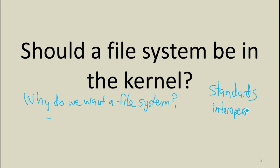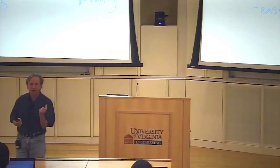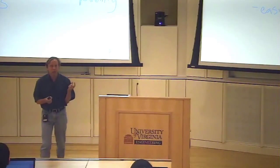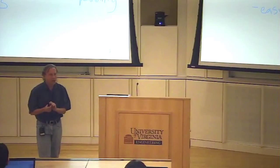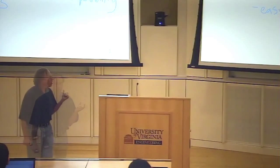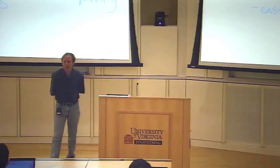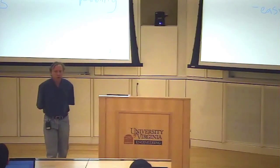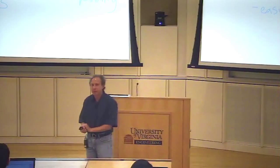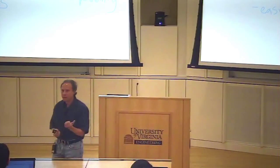All of these sound like good things. If companies agree on how you're going to format things on a disk or an SD card, then your data should be interoperable. But it's not clear you'd need to implement a file system in the kernel to have that — you just need enough agreement about how you store things. And in order to make it easy to write programs, is that something we need to put the file system in the kernel for? Could we provide that some other way? You might want a regular expression library — that makes it easier to write programs. Should that be in the kernel?